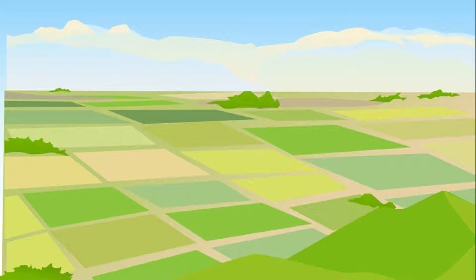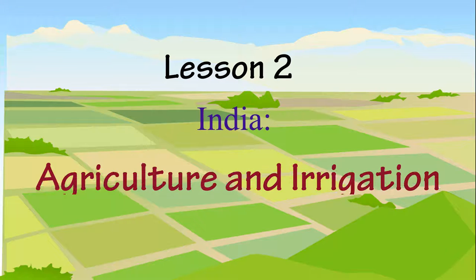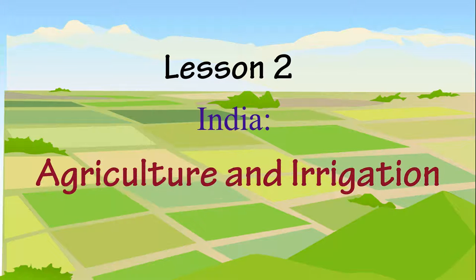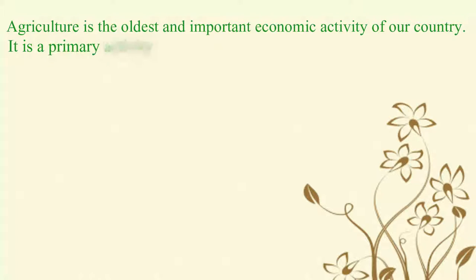Let us go through the key points of the lesson. India: Agriculture and Irrigation. Agriculture is the oldest and important economic activity of our country. It is a primary activity which includes growing crops,